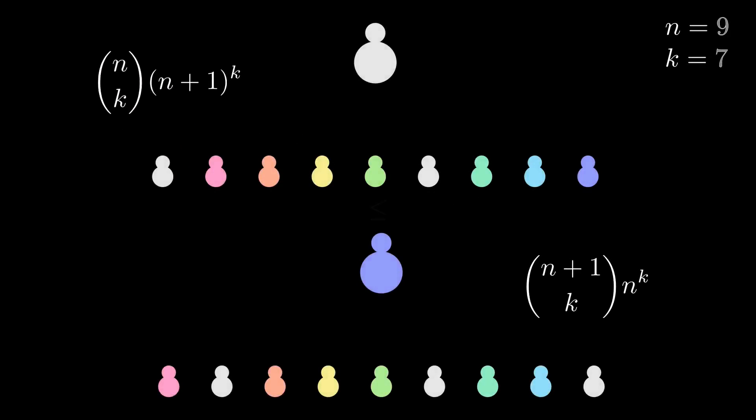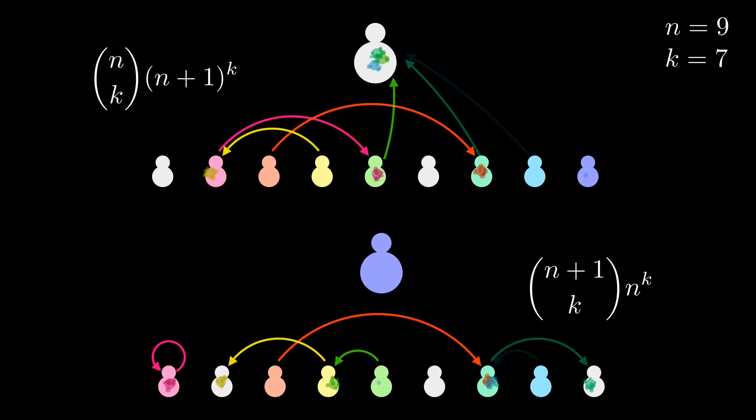Like before we're going to have some paint balloon fights, but this time we only have k balloons, so not everyone is going to get one. Let's again have n kids and one adult handy. For our animation, we'll put the left hand, smaller set, on top. For the top set, this expression counts the number of ways we can choose k of the n children to receive balloons, and then have those kids throw their balloons at any target, including the adult.